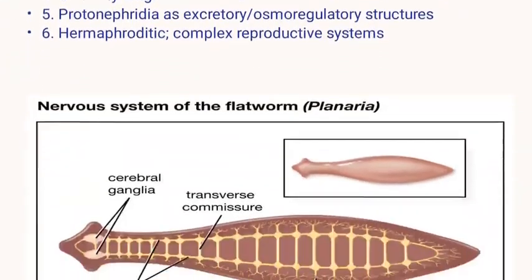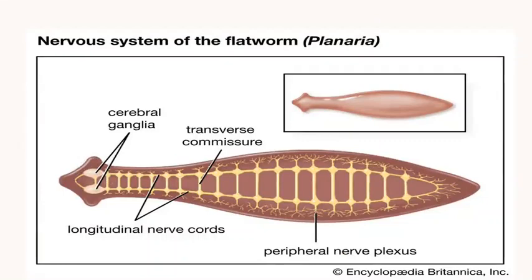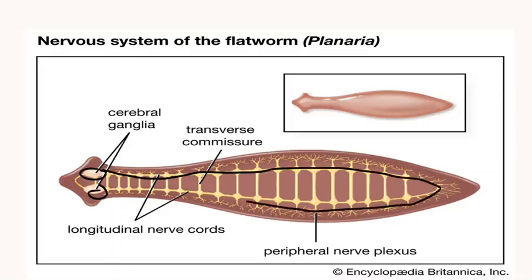As you can see in this diagram, there are two cerebral ganglia, and these two cerebral ganglia are joined by longitudinal nerve cords that run along the entire length of the body. These two longitudinal nerve cords are joined by transverse commissures. This nervous system of Platyhelminthes is the first step toward cephalization.